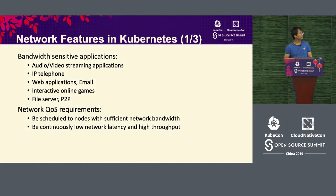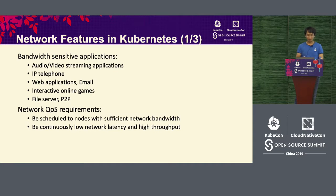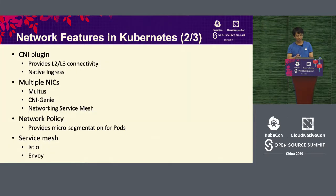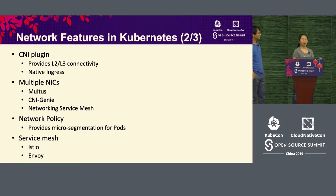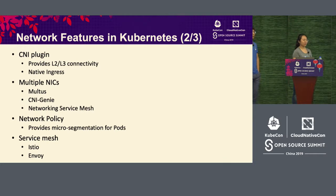Here are several bandwidth-sensitive applications: audio/video, IP platforms, web applications, email, online gaming, file servers, and P2P. For all of these, we have to deploy on nodes with sufficient bandwidth, guarantee very low network latency, and very high throughput. As mentioned, some telecommunications applications are particularly sensitive to bandwidth. Currently, in the Kubernetes upstream community, there is no open and complete solution for cluster-level network bandwidth QoS.